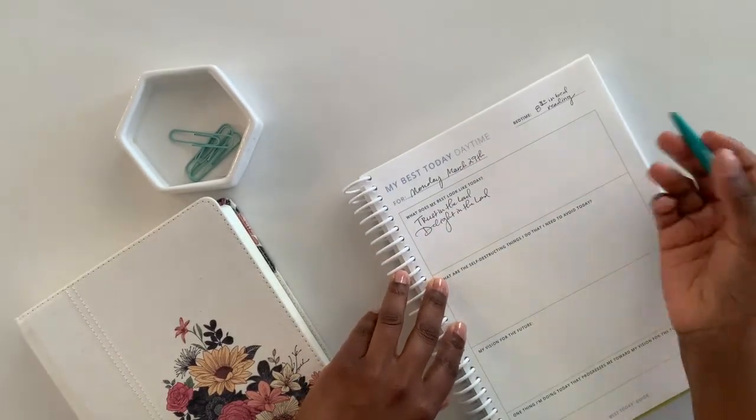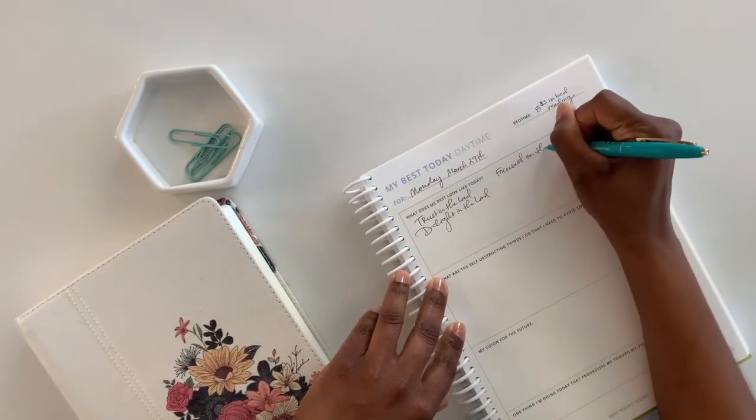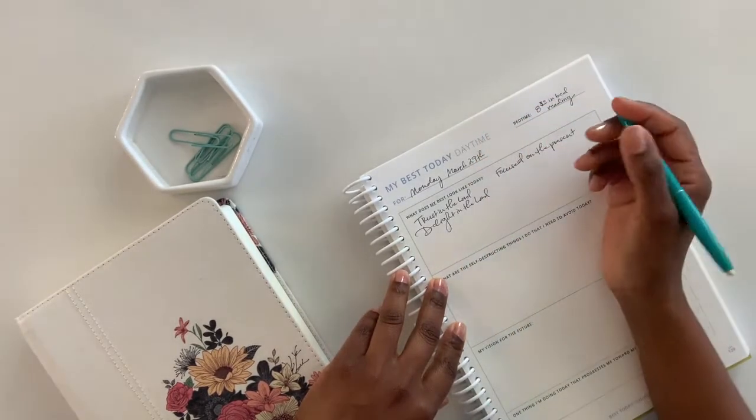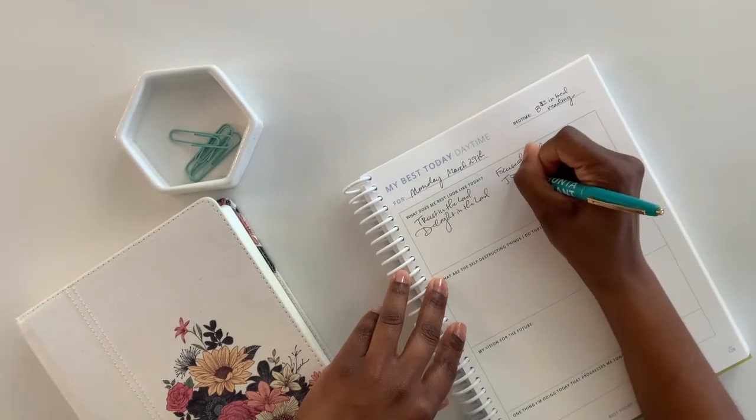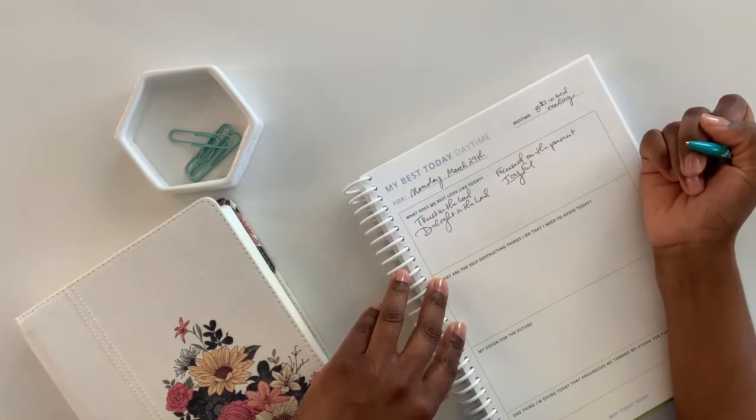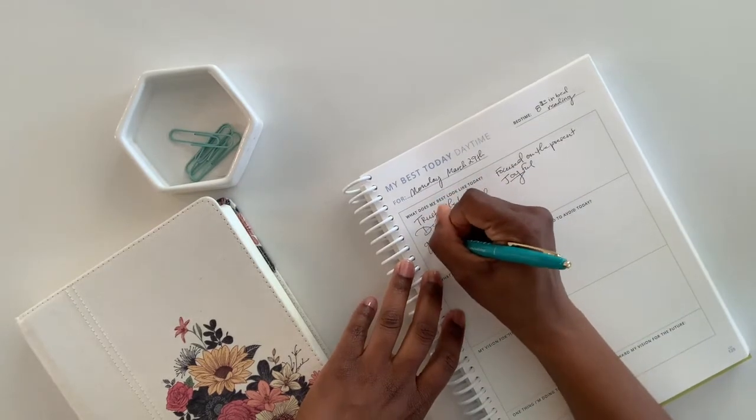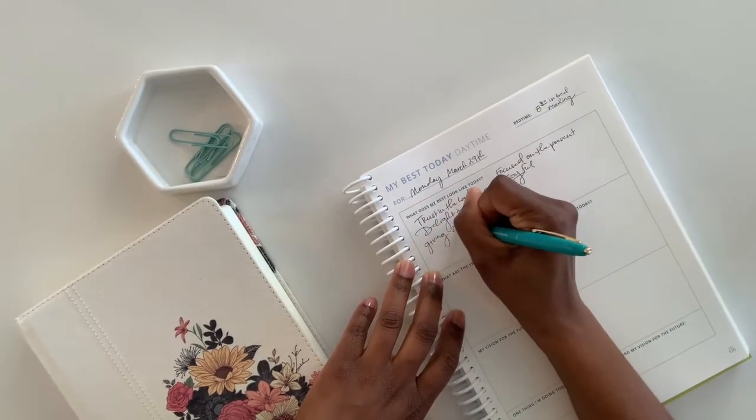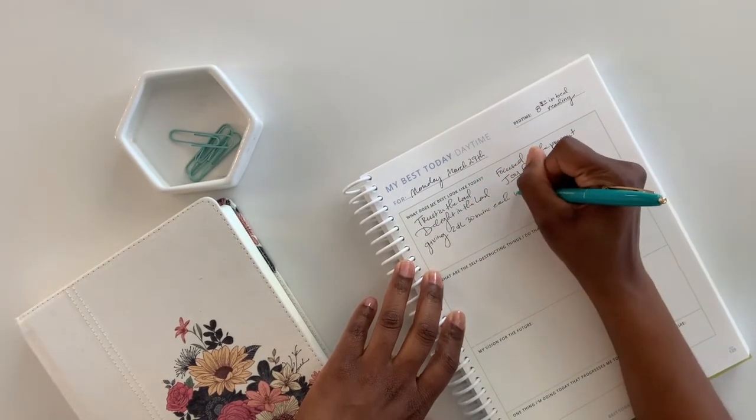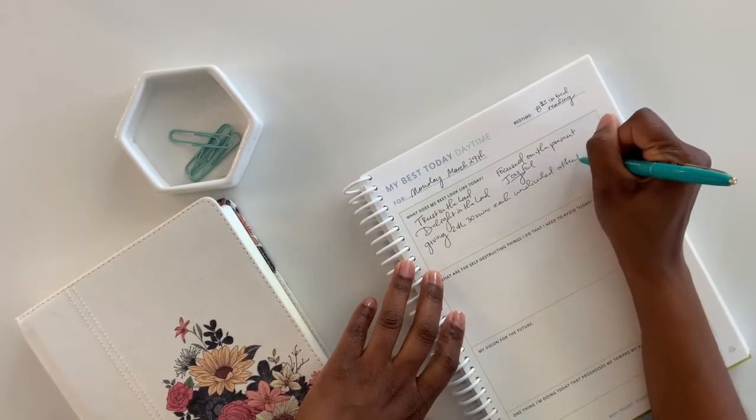Usually almost every day, I know, especially on work days, I need to be focused on the present and only that thing that whatever I'm working on. I almost always need to have joy, be very joyful. And so I will write joy or be joyful. What does my best look like today? Again, it very much so matters. That's giving my children 30 minutes each undivided attention screen free.